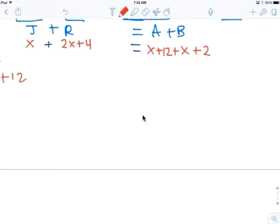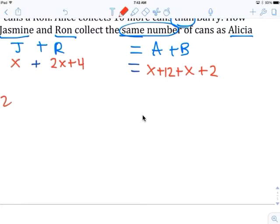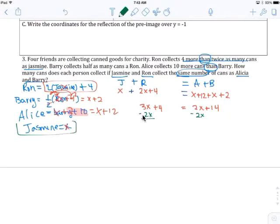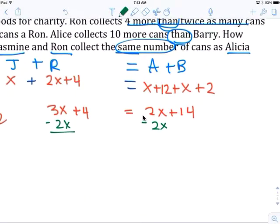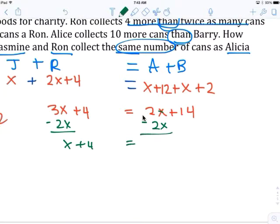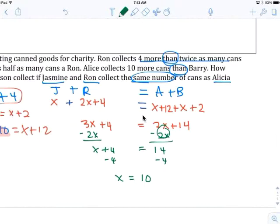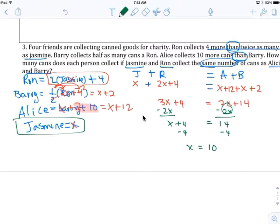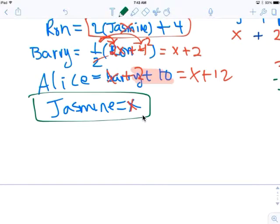So you get that. 3x plus 4 equals 2x plus 14. Minus 2x, minus 2x. x plus 4 equals, minus 4, minus 4. Jasmine collected 10 cans. x plus 4 equals 14. Minus 4, minus 4. Jasmine collected 10 cans for charity.